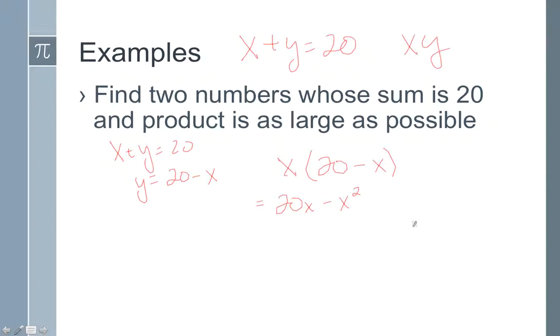We can solve this quadratic function to find the maximum. Graphically it's a vertex at the maximum point. But here's where the calculus comes in. We can find the derivative of this. If this is the product function we can find the derivative to get 20 minus 2x.